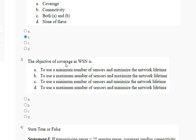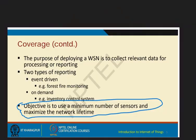Question three: the objective of converge in WSN is — the explanation is that converge in WSN aims to use a minimum number of sensors and maximize the network lifetime. The correct answer for question three is option A.